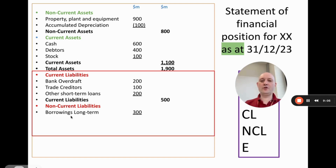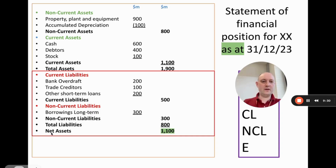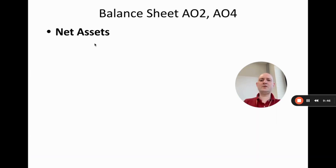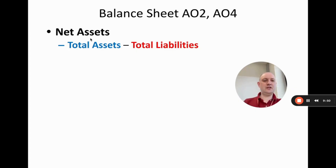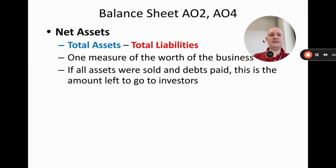Non-current liabilities: long-term borrowing of 300 million, giving total non-current liabilities of 300 million. Adding current and non-current together gives total liabilities of 800 million. Then we calculate net assets: the word 'net' means one thing minus another. Total assets minus total liabilities — 1.9 billion minus 800 million — gives us net assets of 1.1 billion. This is one measure of the worth of the business, sometimes called the balance sheet value.